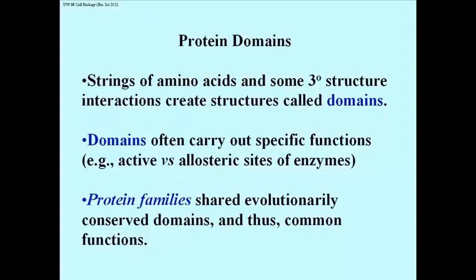Strings of amino acids, and even some three-dimensional structure interactions, create structures that we call domains. Originally they were defined as functional domains — that is, regions of the polypeptide that perform an identifiable function. For example, the active site of enzymes would be a domain. It's a region with a very specific structure intended for a very specific interaction. Active sites of enzymes are often formed by amino acids that are not necessarily contiguous, but that fold over and find themselves in the same vicinity, even if they are not close to one another in the amino acid sequence. So that would be a functional domain of a polypeptide.